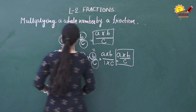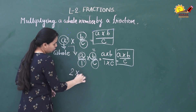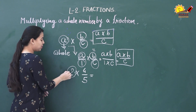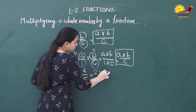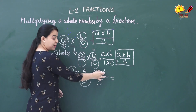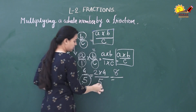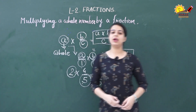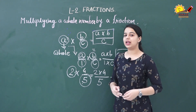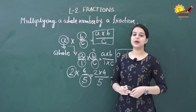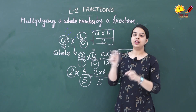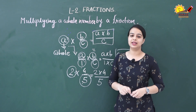Let us see another example: 2 multiplied by 4/5. Here 2 is the whole number. We multiply the whole number with the numerator: 2 multiplied by 4 equals 8, and in the denominator we put 5 as it is, giving 8/5. To multiply a whole number with a fraction, multiply the whole number and the numerator, and put the denominator as it is.